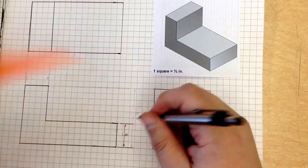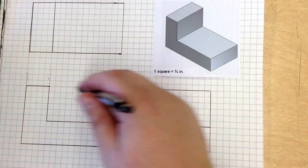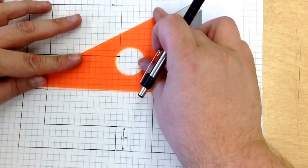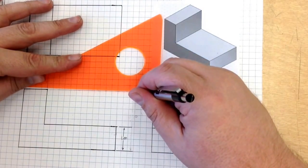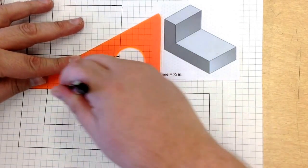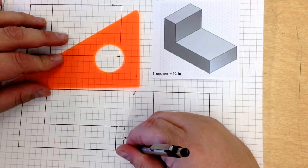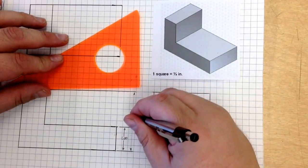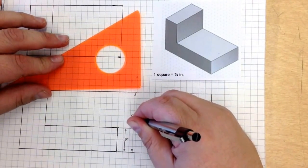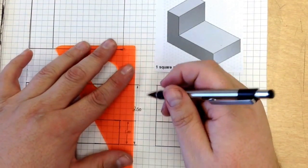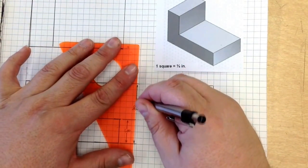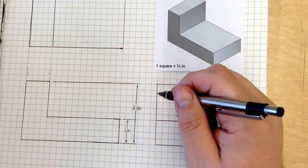And then connect them like so. Now our next feature up happens to be this one, so I am going to follow that on out, like so. Give my dimension arrows. This is 2.50, and I will connect my lines just like that.